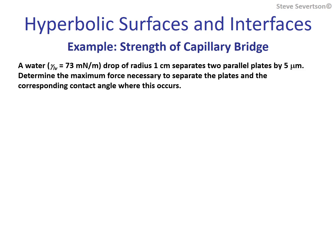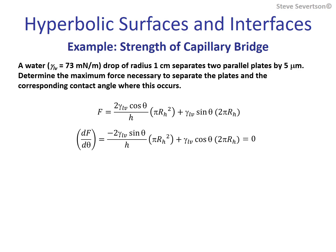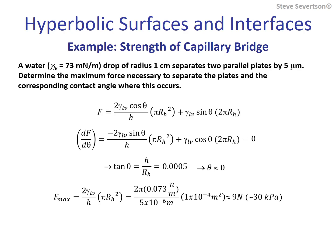Here we apply the equation just developed. The question asks us to determine the maximum force required to separate the plates and the contact angle at which this occurs. To find the maximum force, we find the maximum of the equation with respect to contact angle. As expected, the maximum occurs for complete wetting—a contact angle of zero—eliminating the contribution from the wetting line. This means capillary pressure really governs the extent of the interaction. Entering the properties and capillary dimensions results in a surprisingly large force for such a small drop. Given the inverse relationship between capillary pressure and surface separation distance, as the drop evaporates, this force climbs asymptotically.